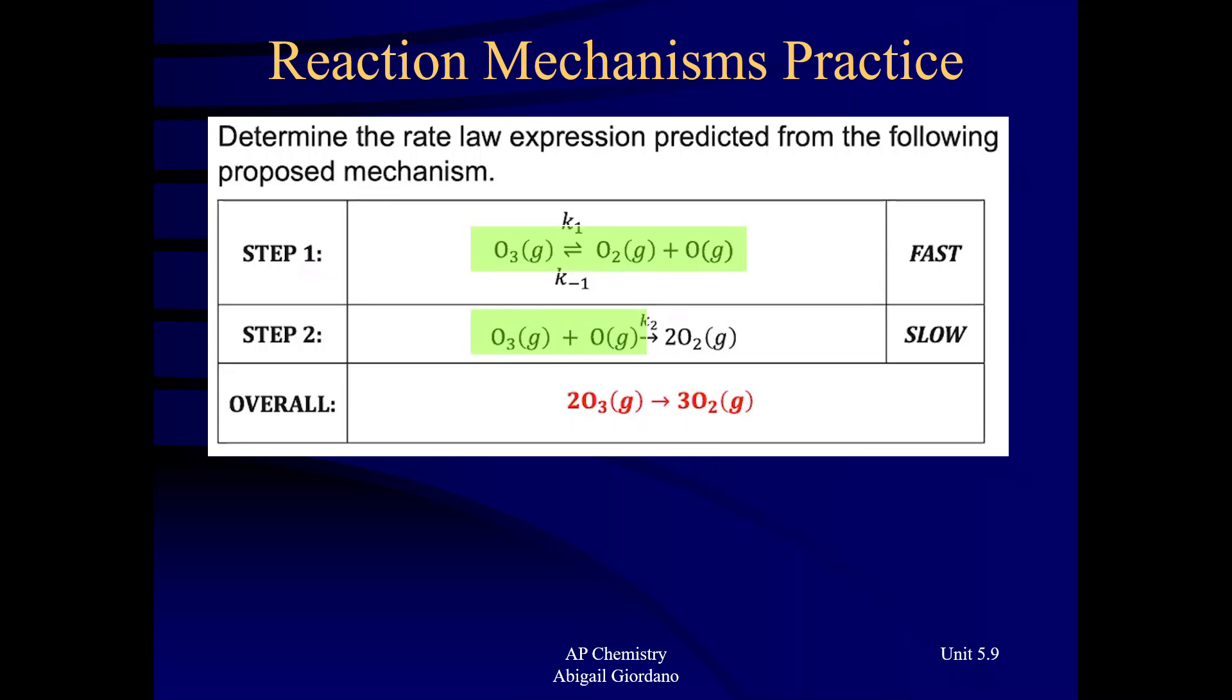let's make sure we know what to shade in. Again, the reactants of the slow step and anything above it, the entire elementary step above it, reactants, products, everything. Within that shaded region, is there anything that I can cancel out? And yes, I see that there is something that we can cancel out. Okay. There's an intermediate.